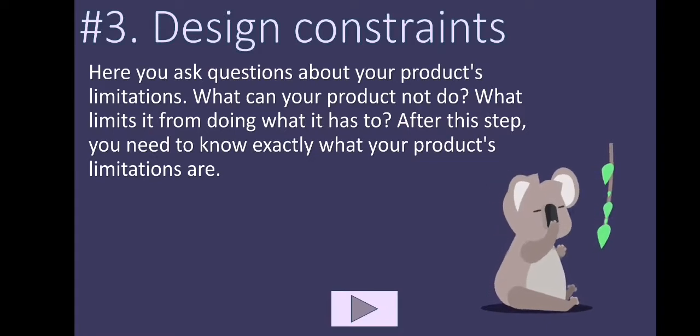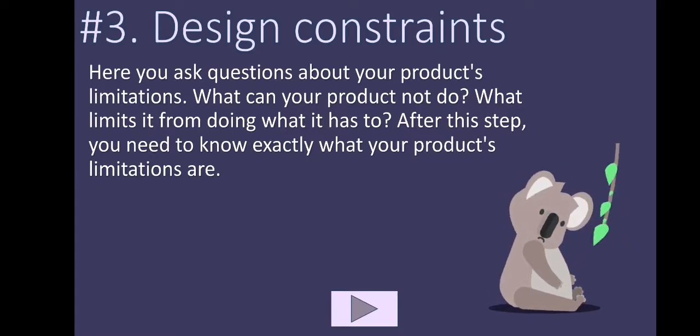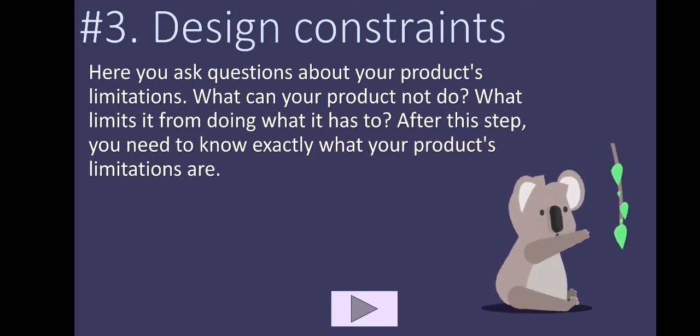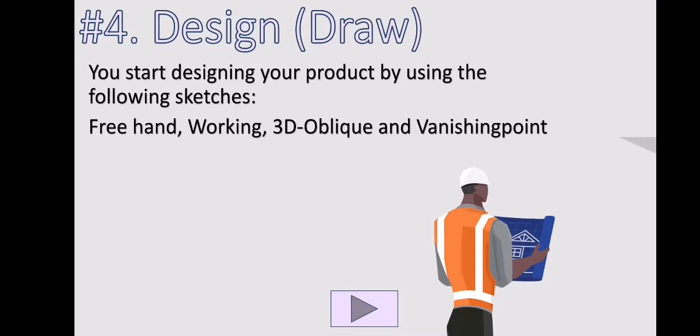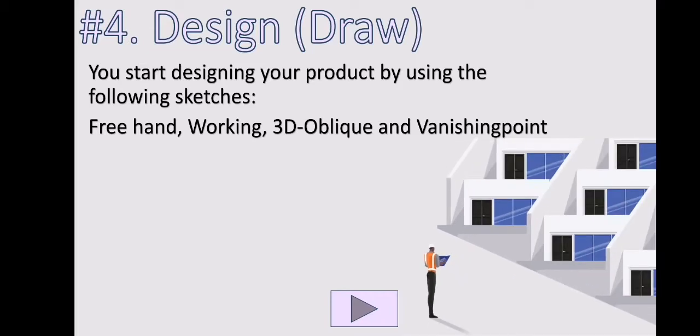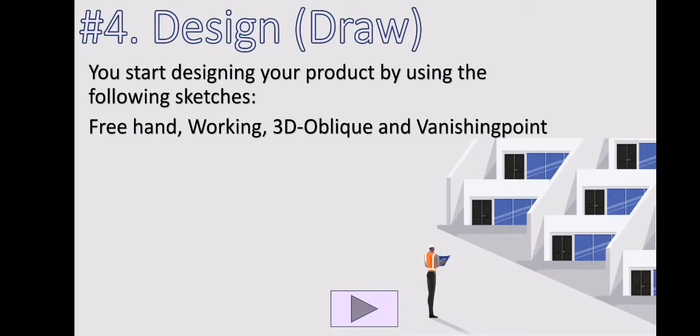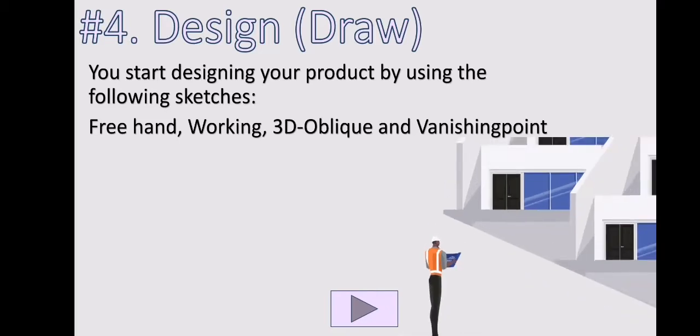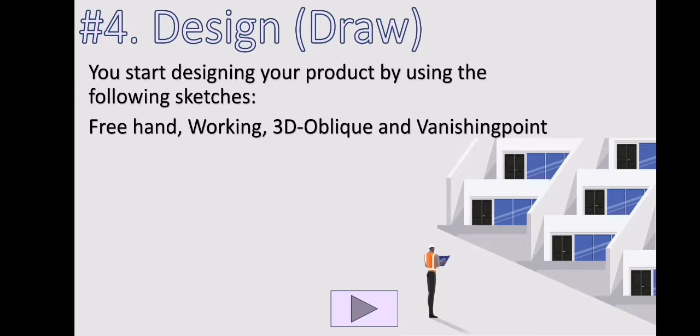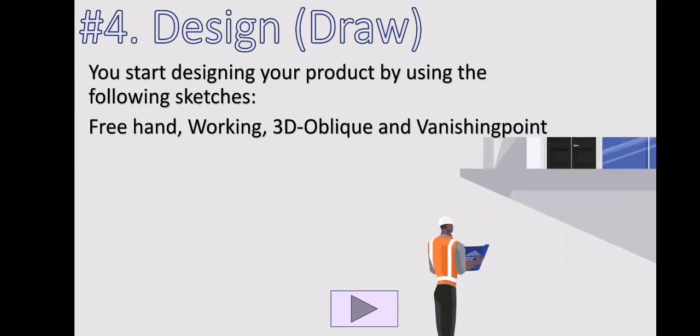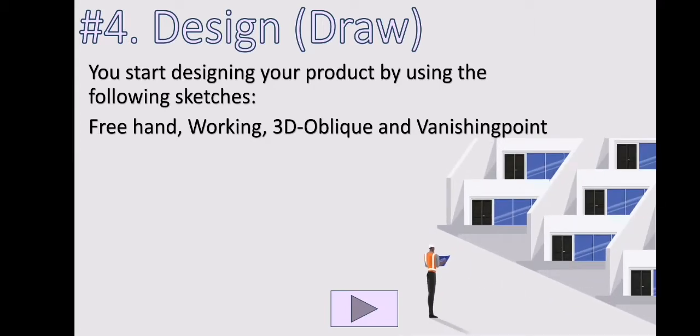You've done step one, understand the problem. Step two, understand your product. Step three, understand what your product cannot do. Now it's time to start drawing or designing your product. Now you're going to use everything you've learned so far: freehand sketch, working sketch, 3D oblique drawings, and vanishing point sketches. All of these sketches you're going to use now when you design your product.